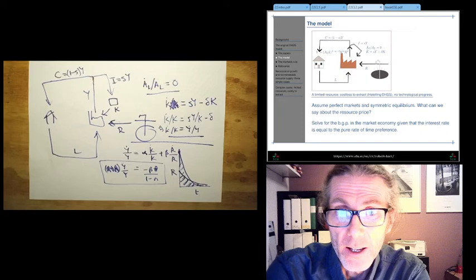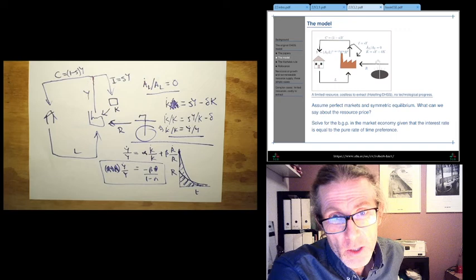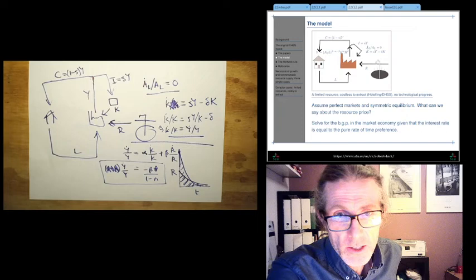Okay, so what's so great about this DHSS model compared to for instance the limits to growth model? Well, what we've done is we've changed the production function from Leontief to Cobb-Douglas, but that's not actually the most crucial difference.